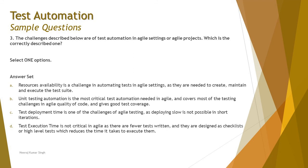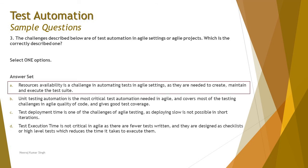Option D: test execution time is not critical in agile as there are fewer tests written and they are designed as checklists or high-level tests, reducing execution time. This is trying to say there are no challenges in agile at all, so we can rule this out completely. Test execution time is actually a challenge, as the increasing test suite volume every sprint creates a load of tests needed to be run. This is why we look at option A — it requires resources to be allocated for such activities. The right answer is A: resource availability is a challenge in automation testing in agile settings.